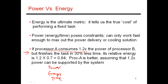If a program has a given performance deadline and only processor A is able to meet that deadline, then performance matters and A is the clear winner. If there is a performance constraint and only one processor meets it, you should obviously go with that processor.